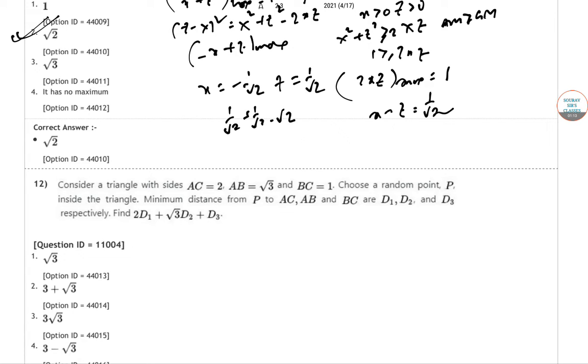Consider triangle AC equal to 2, AB equal to root 3, and BC equal to 1. Consider random point P inside the triangle. Minimum distance from P to AC, AB, and BC are D1, D2, D3. So let's draw it first.